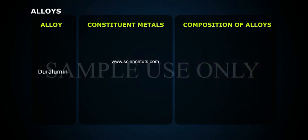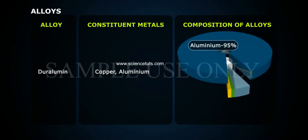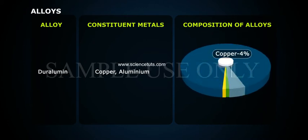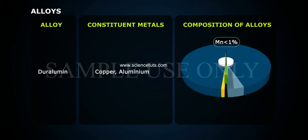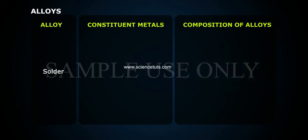Duralumin is composed of copper and aluminium — aluminium 95%, copper 4%, manganese less than 1%, and magnesium 0.5%.